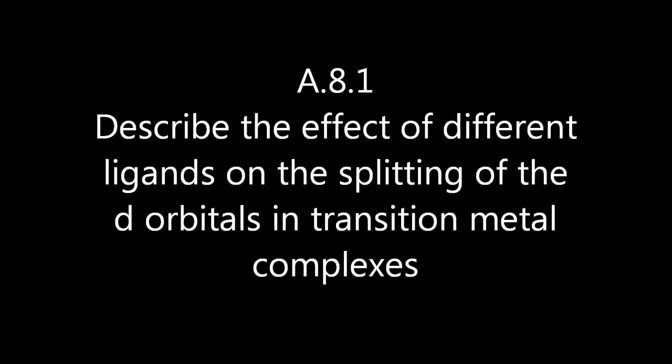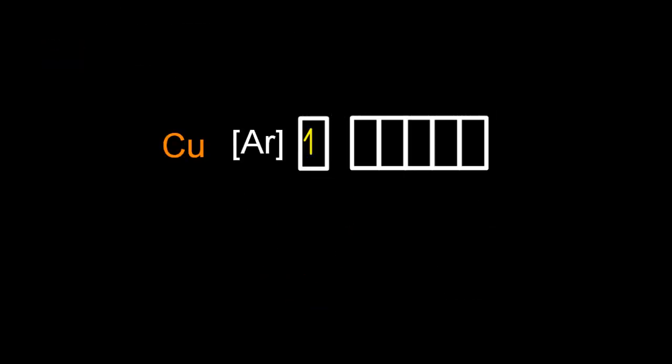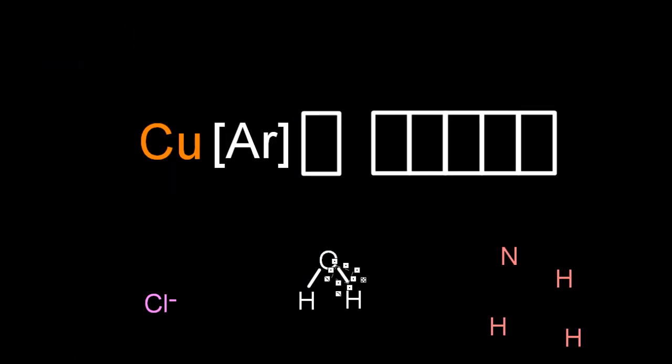Describe the effect of different ligands on the splitting of d-orbitals. I'm going to start by drawing out the electron configuration for copper: to argon, 4s1, 3d10.